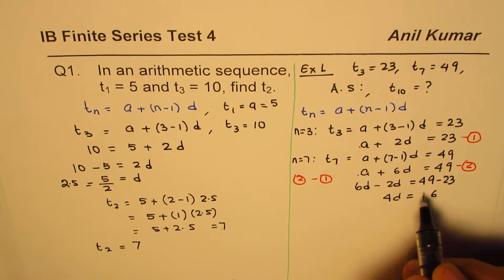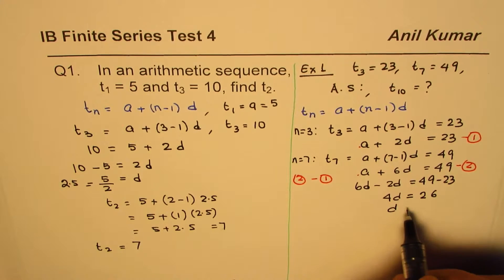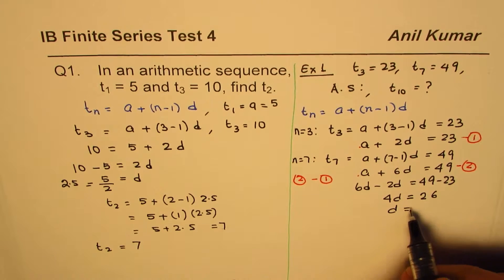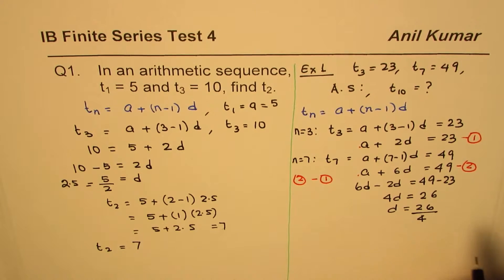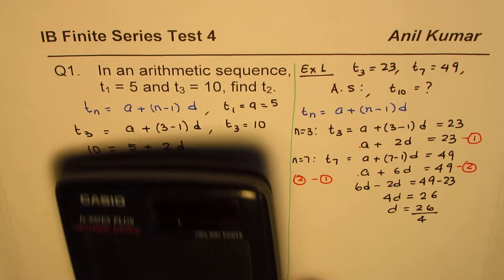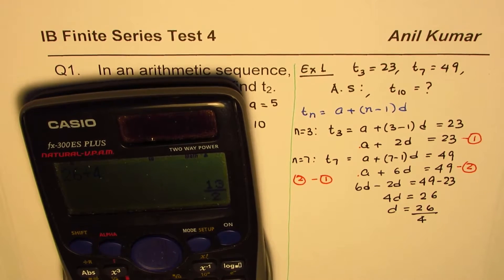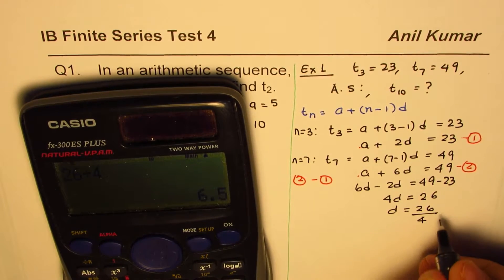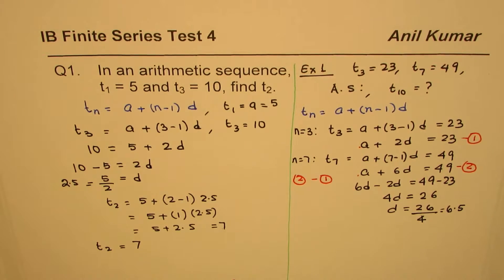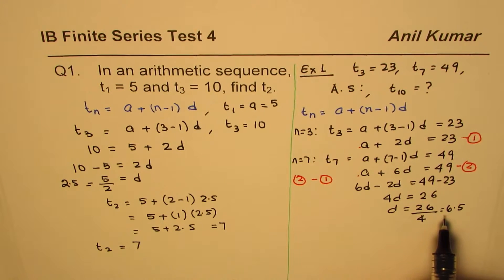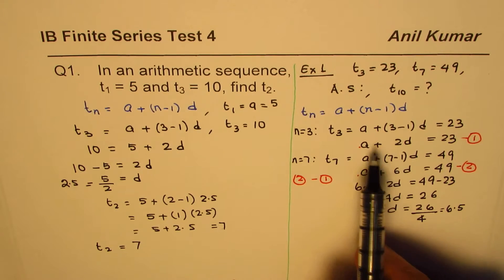So d = 26 ÷ 4, which is a decimal value. Calculating: 26 divided by 4 equals 6.5. So d = 6.5.